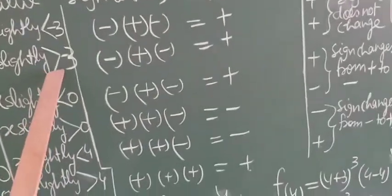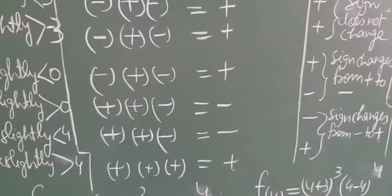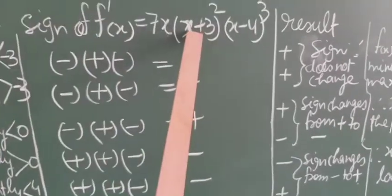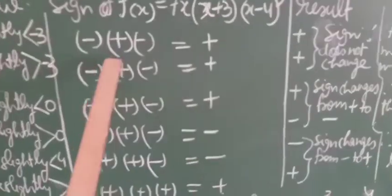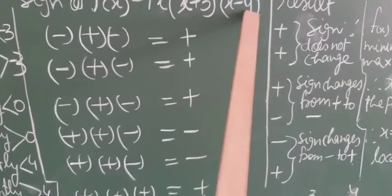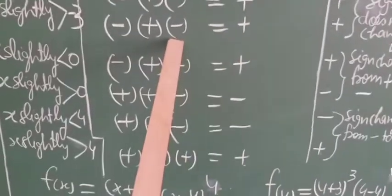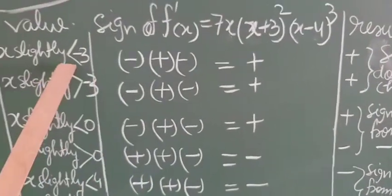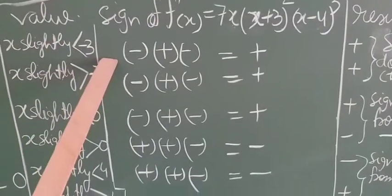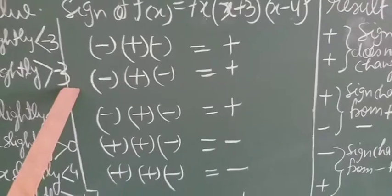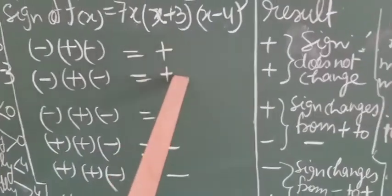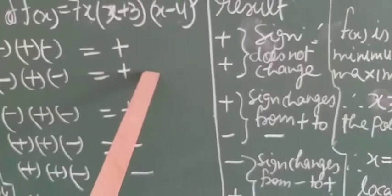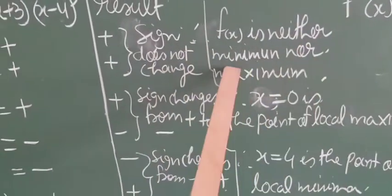Now putting a value slightly more than −3, say −2.9. In 7x it is negative, in (x+3)² it is positive, and in (x−4)³ it is negative. So the sign is again positive. Since the sign does not change when passing through x = −3, f(x) is neither a minimum nor a maximum at x = −3.